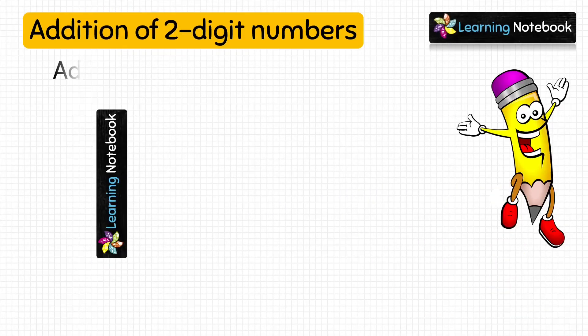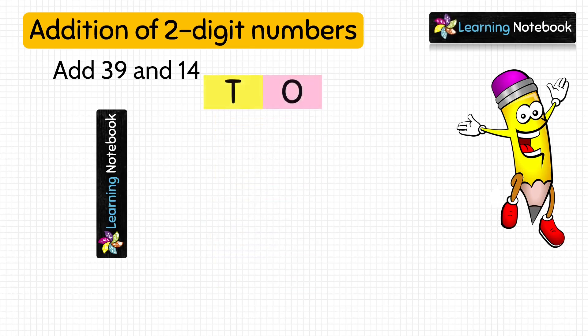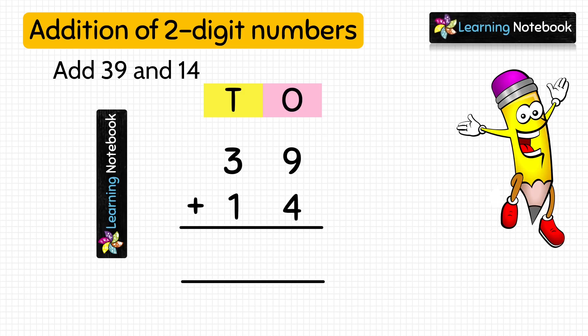Let's do the next question. Add 39 and 14. So let's first write these numbers in column, and then we will add the digits at ones place. 9 plus 4 equals 13.